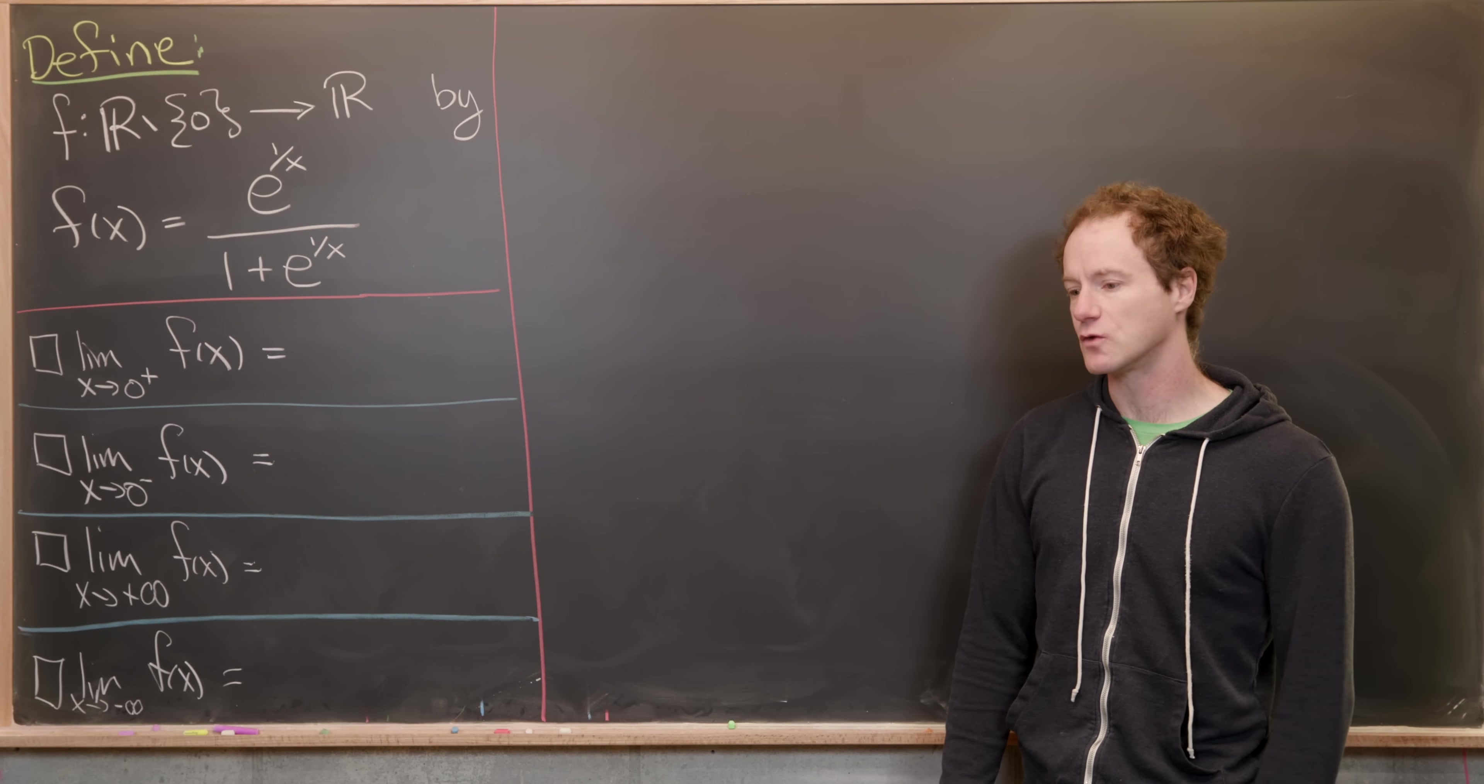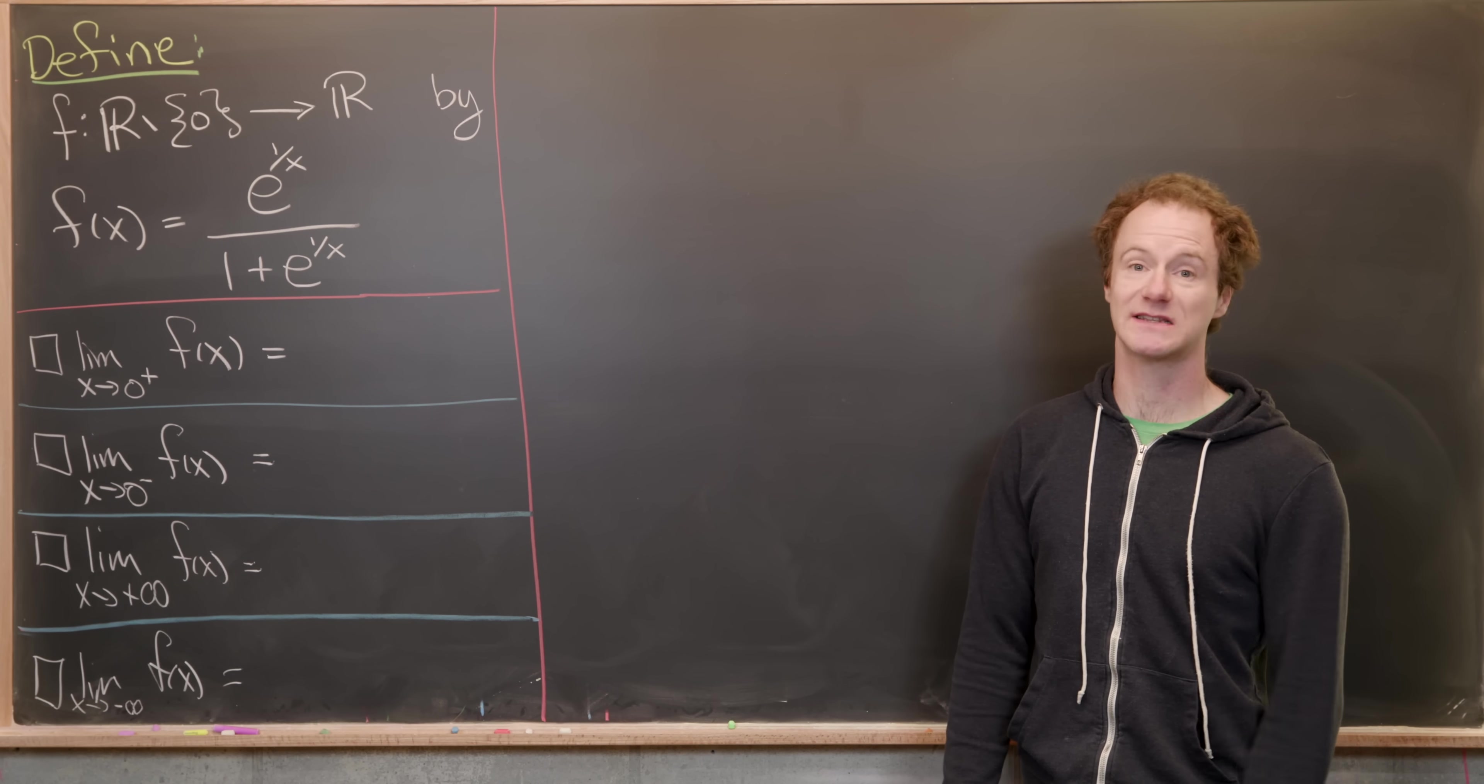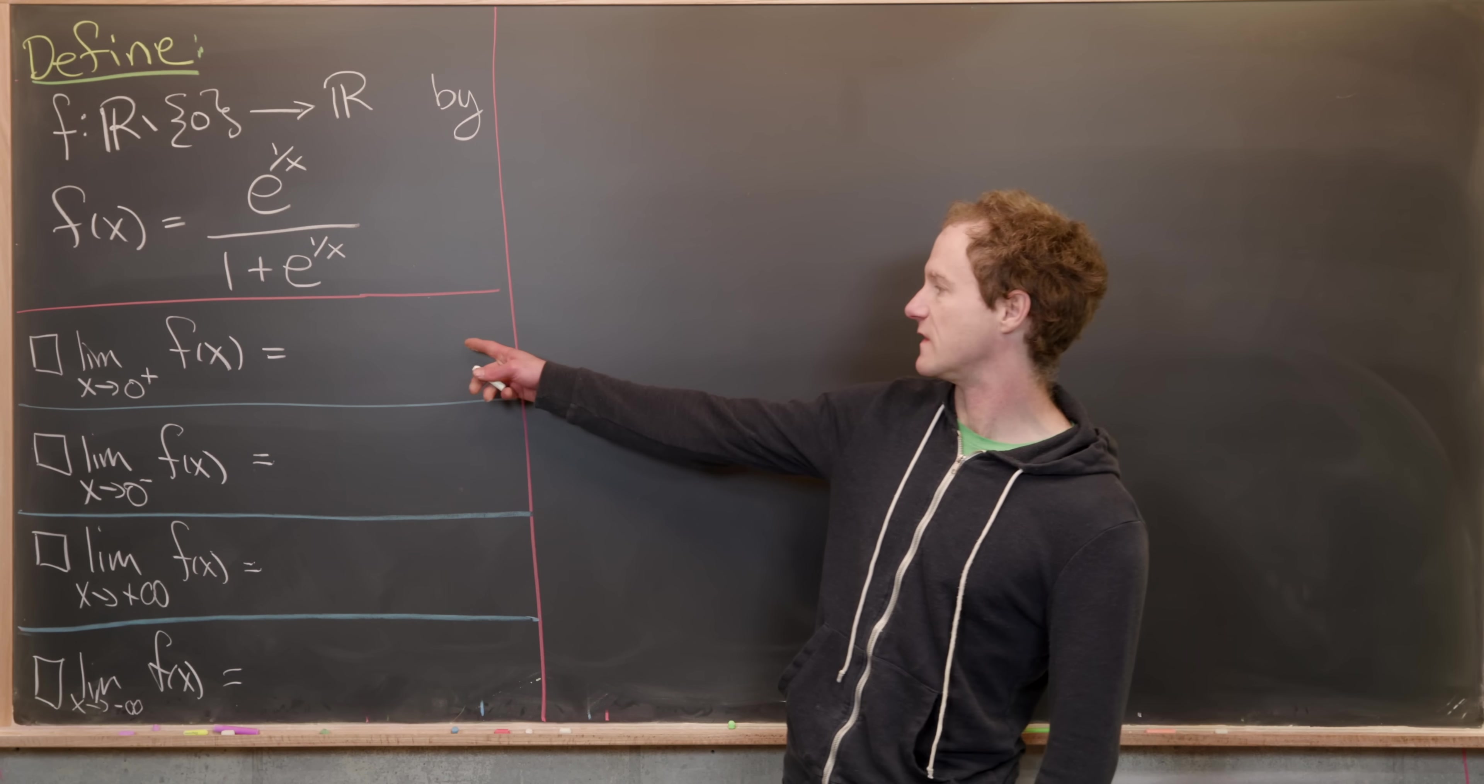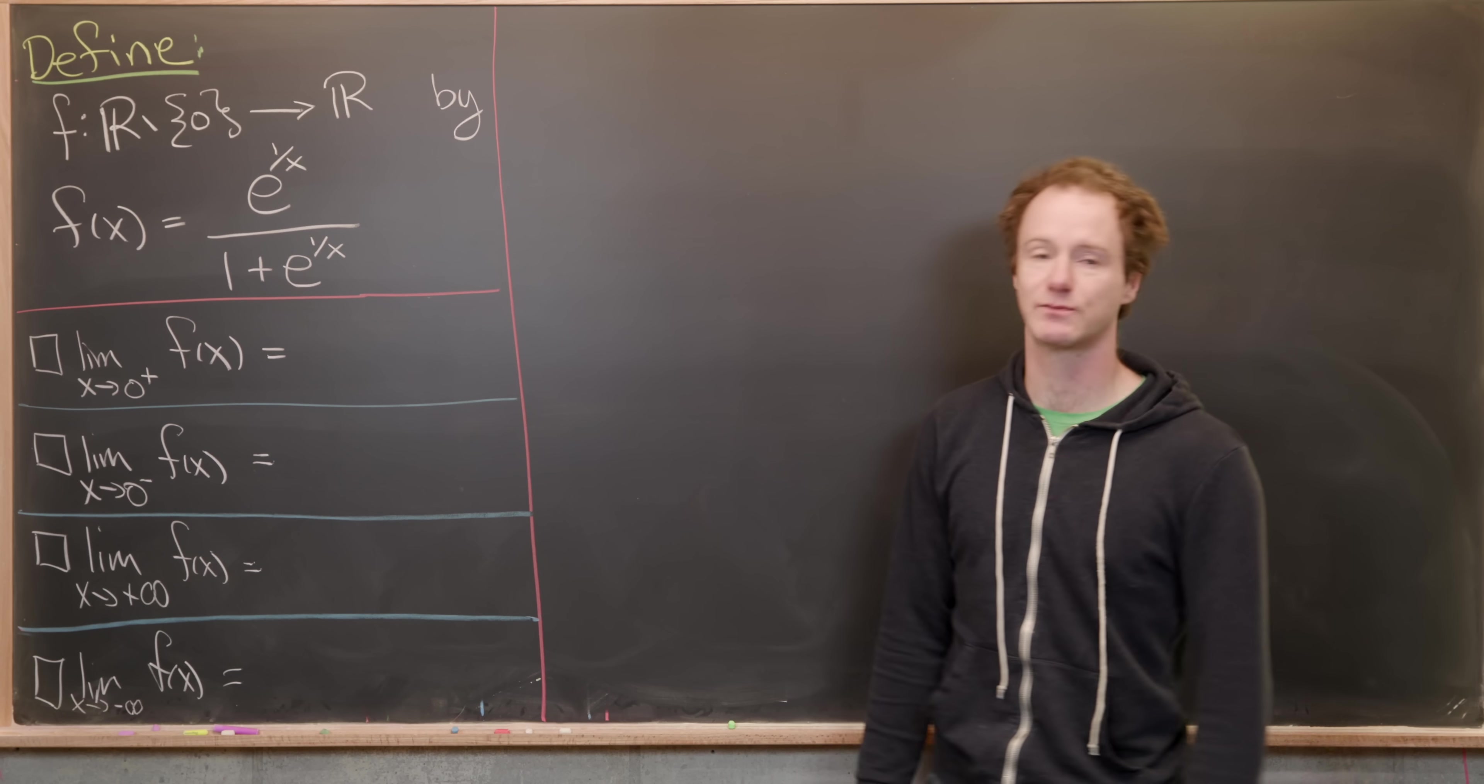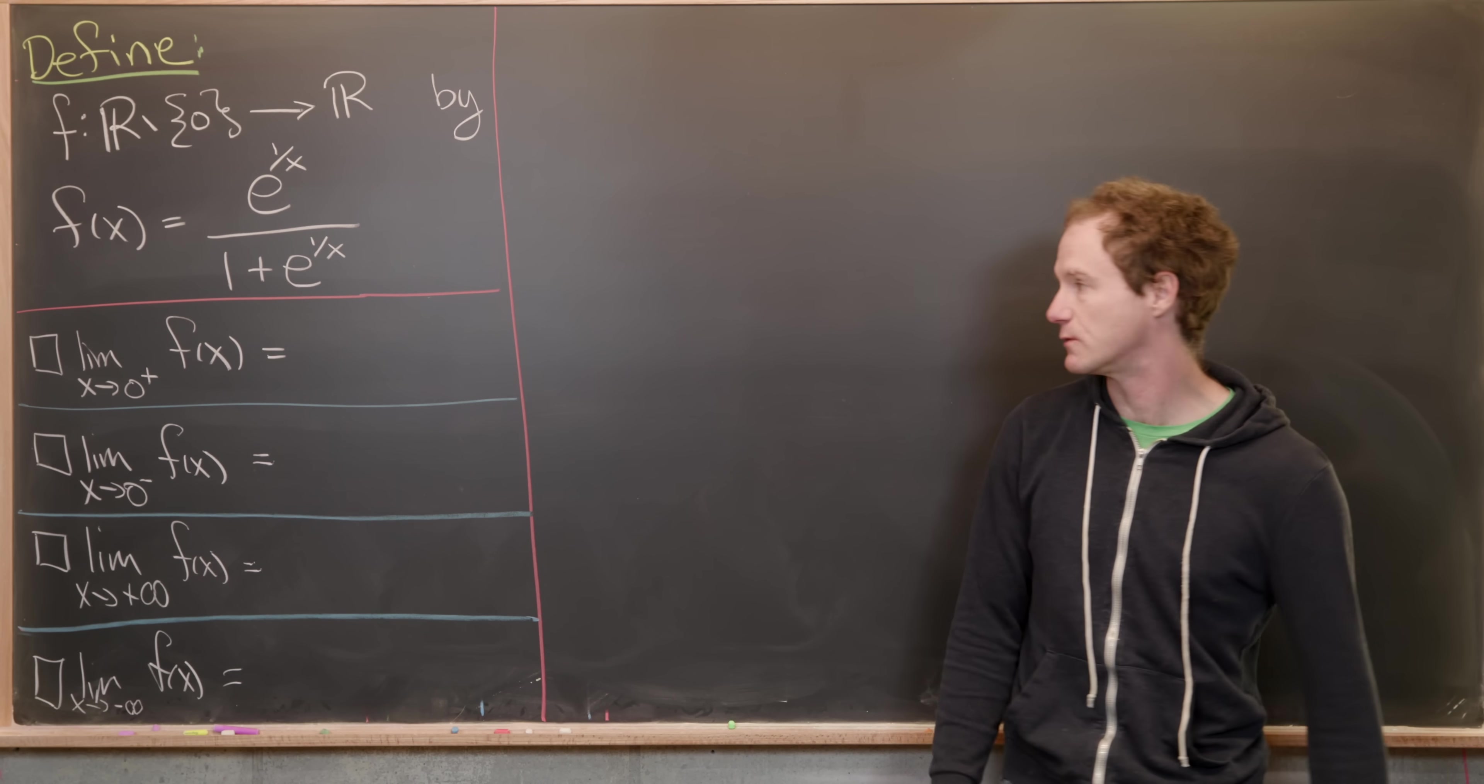Now you might think that we could redefine this so that it has a value at zero by looking at its limit. So let's see if that's possible. We'll calculate the right-handed limit as x approaches zero and the left-handed limit as x approaches zero and see what happens.